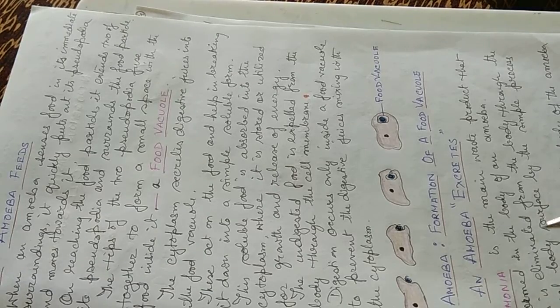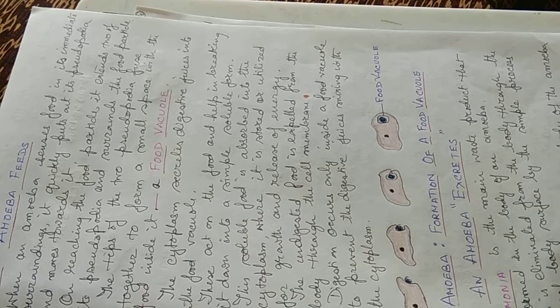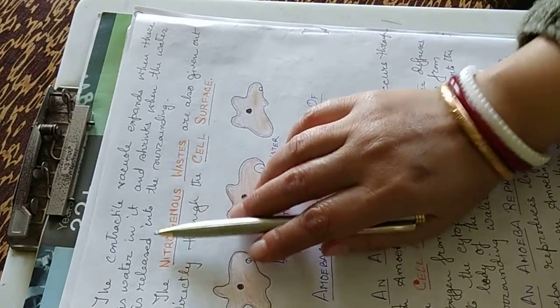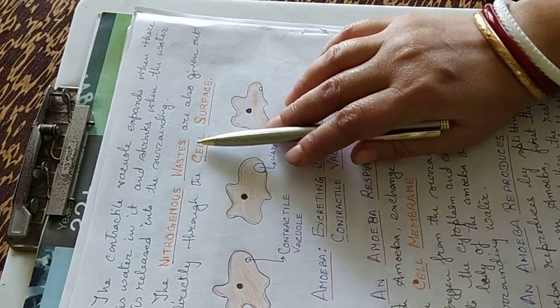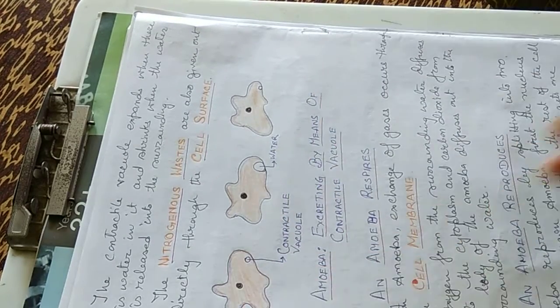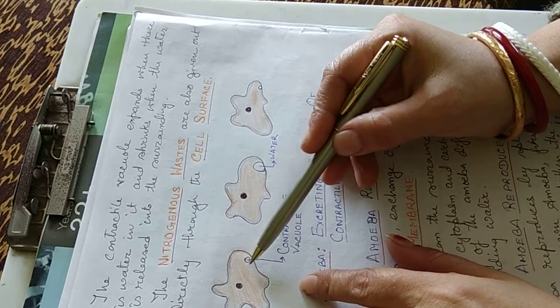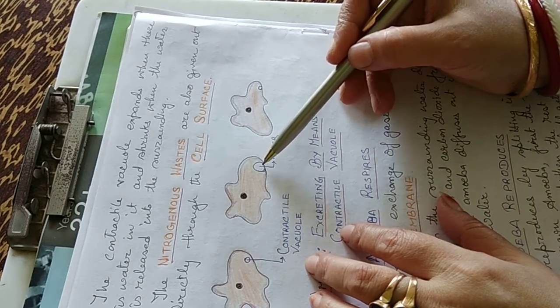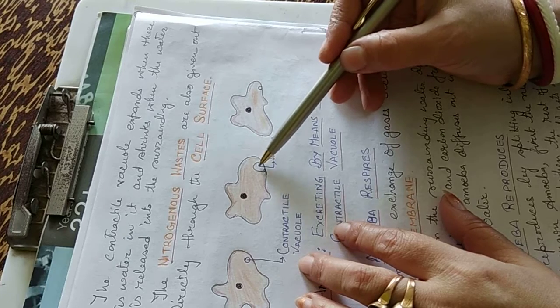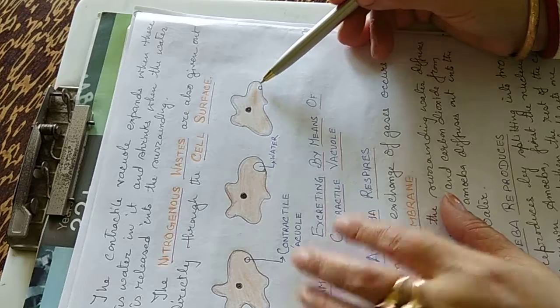How does it excrete? Ammonia is the main waste product that is formed in the body of the amoeba. This is eliminated from the body through the general body surface by simple process of diffusion. Excess water from the body of the amoeba is collected in the contractile vacuole. The contractile vacuole expands when there is water in it and shrinks when the water is released into the surrounding. The nitrogenous wastes are also given out directly through the cell surface. This is the diagram where the excretion takes place in the contractile vacuole. Here is the contractile vacuole where there is water. It slowly moves towards the cell membrane and it expels the water by diffusion and then shrinks inside.